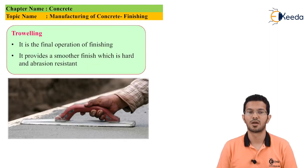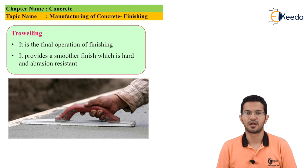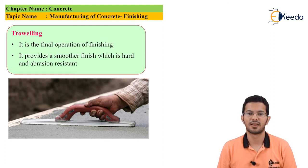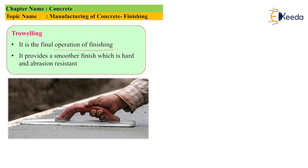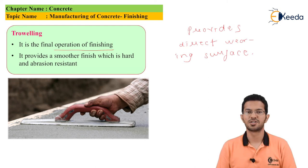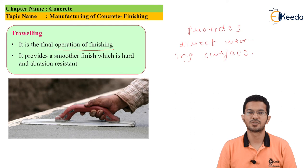The next step is trowelling. Trowelling follows floating to provide a direct finished wearing surface. When carried out correctly on concrete of the appropriate class, trowelling leaves a smooth, very dense surface. It is produced for warehouses and similar large slab areas but can also be used to finish small slabs. It is generally not appropriate for external paving. Power trowelling of air-entrained concrete is not recommended due to the risk of surface delamination. Also, trowelling before the bleed water has evaporated can lead to a risk of delamination.